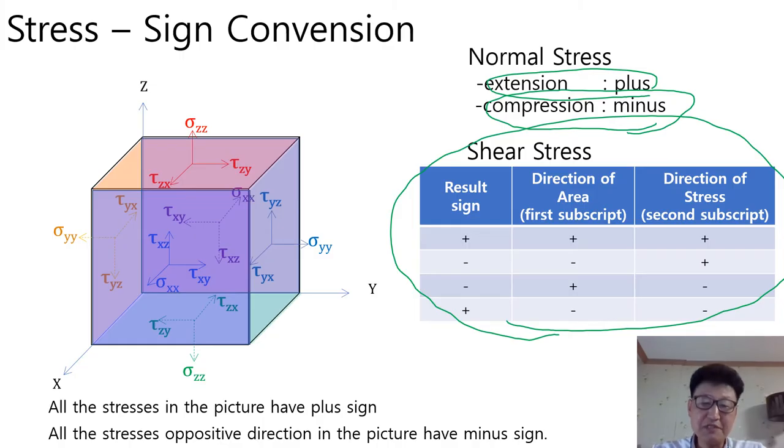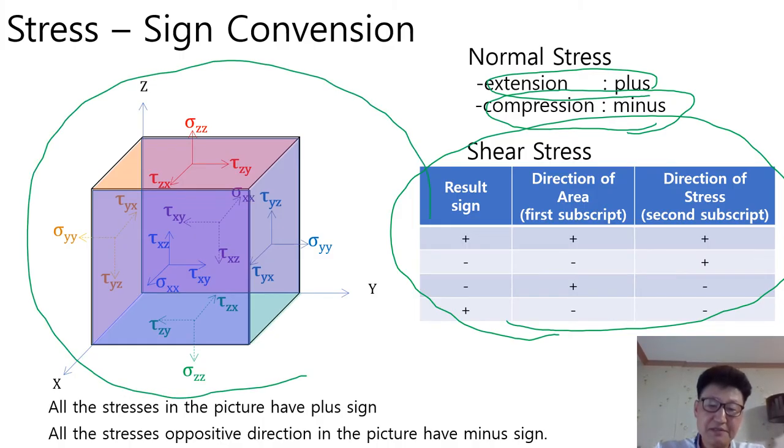All the stresses in the picture have a plus sign. On the other hand, all the stresses opposite direction in the picture have a minus sign.